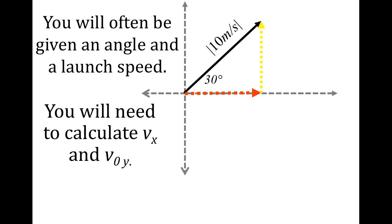Hopefully you got 5 meters per second for the y and 8.66 meters per second for the x. Regardless of how you did it, we're going to do this a lot in this course, so I want to show you a shortcut.